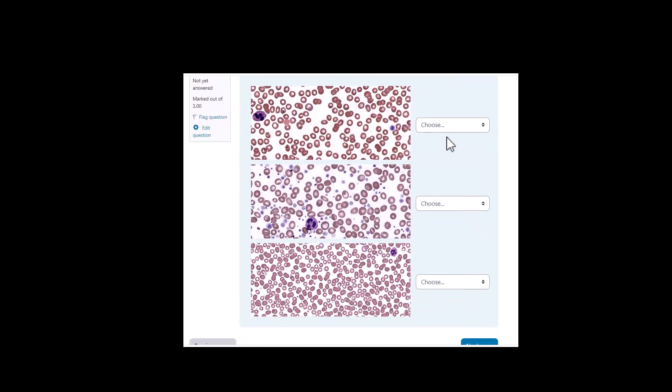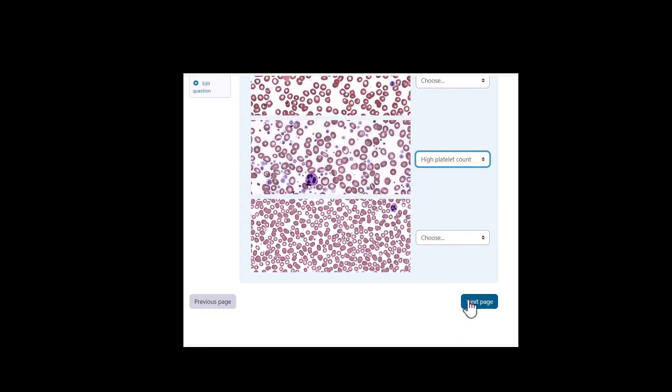Here's another example of drop-down menus looking at low, high, and normal platelet counts. You sit and choose a choice here and get immediately graded.